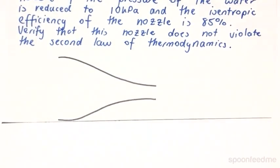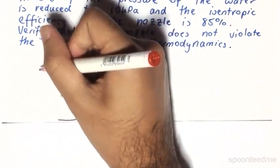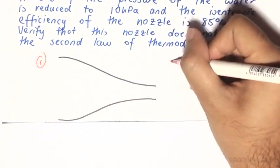So with our diagram over here, we have a regular nozzle. We have the entrance here at state 1 and the exit here at state 2.